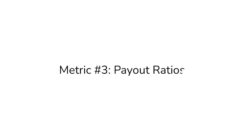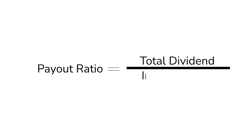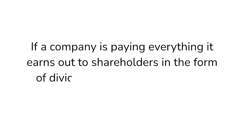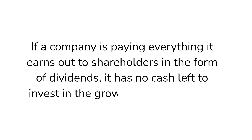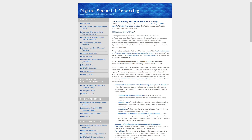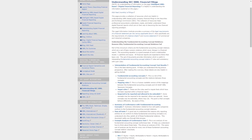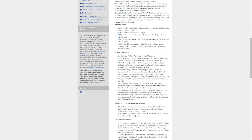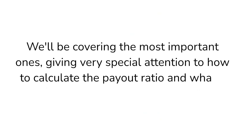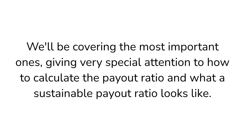Next, we'll look at payout ratios. The payout ratio is the amount of dividend paid divided by some income metric. It's also a measure of the safety and sustainability of the dividend. If a company is paying everything it earns out to shareholders in the form of dividends, it has no cash left to invest in the growth of the business. It also means that a drop in earnings can threaten the dividend, resulting in dividend cuts. There are many income metrics to look at and potentially hundreds of different payout ratios, and we'll be covering the most important ones.